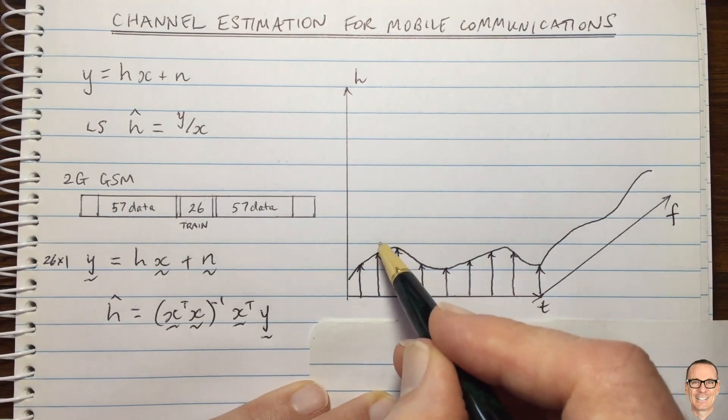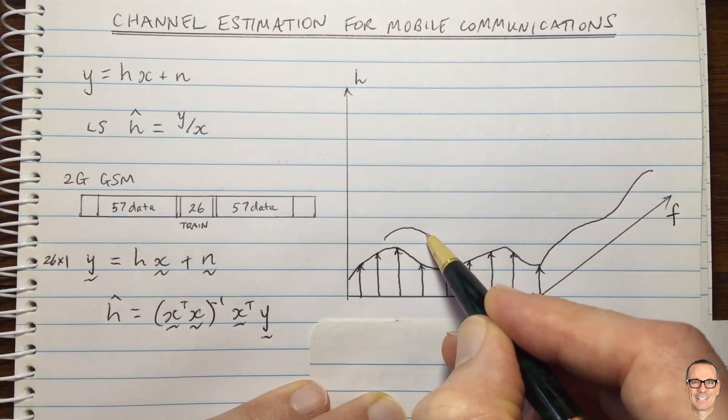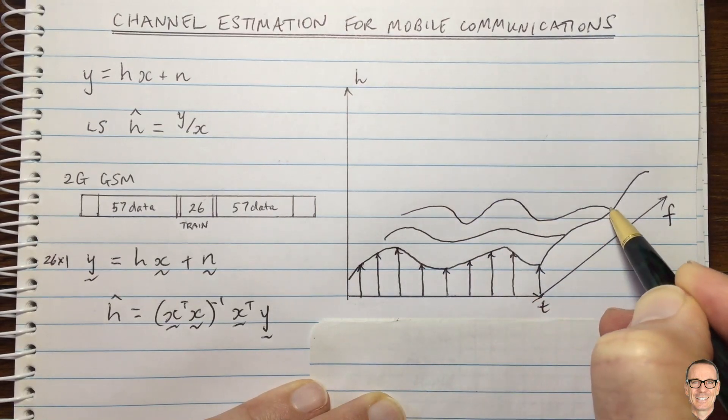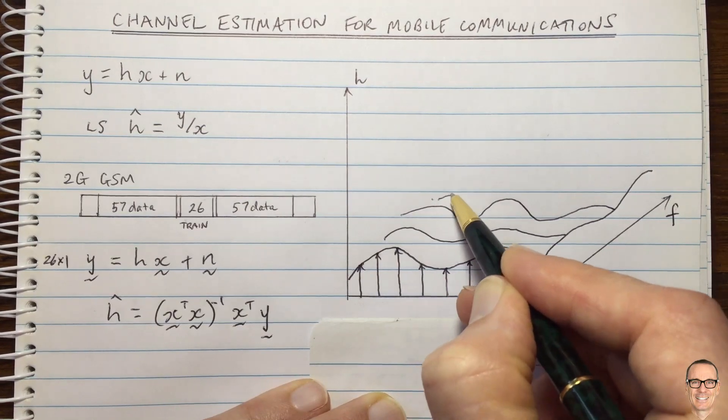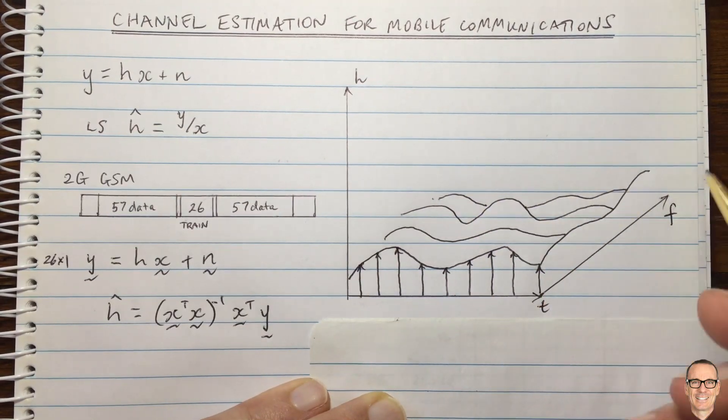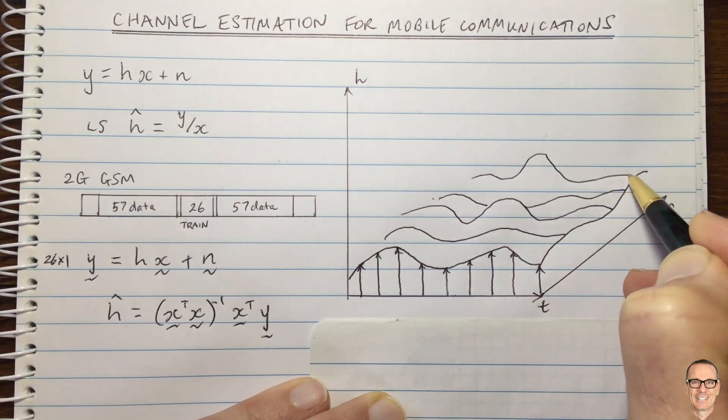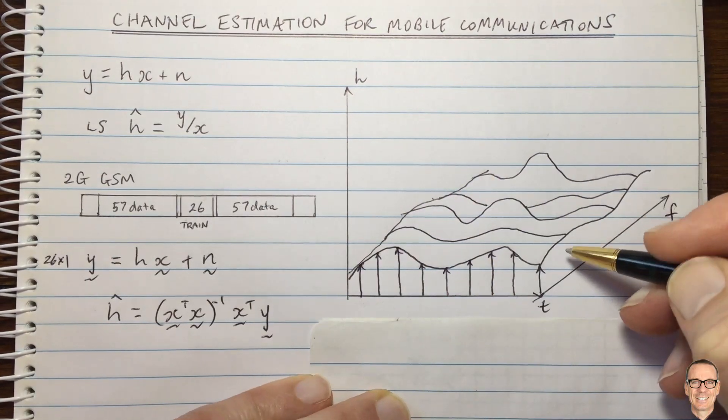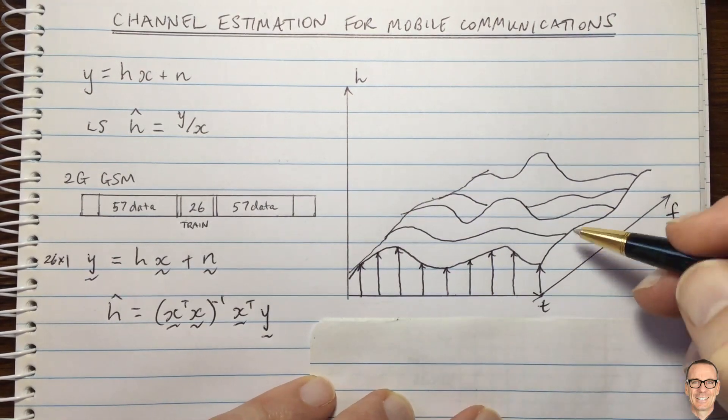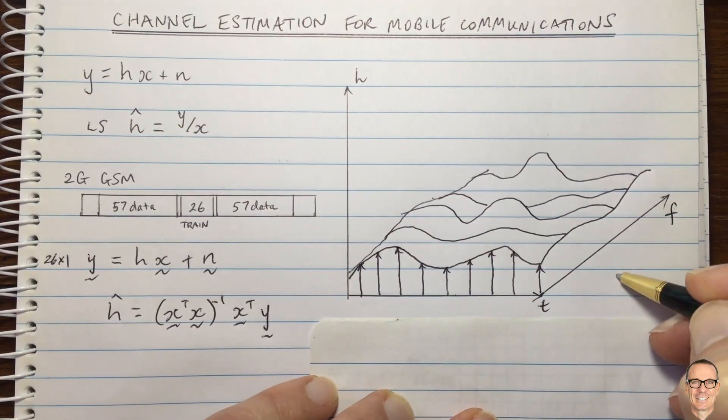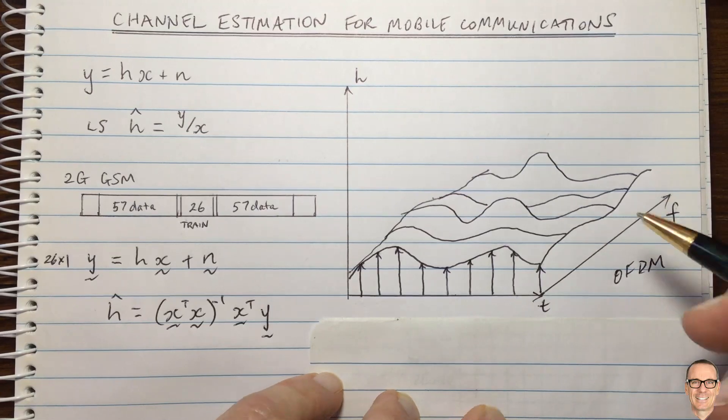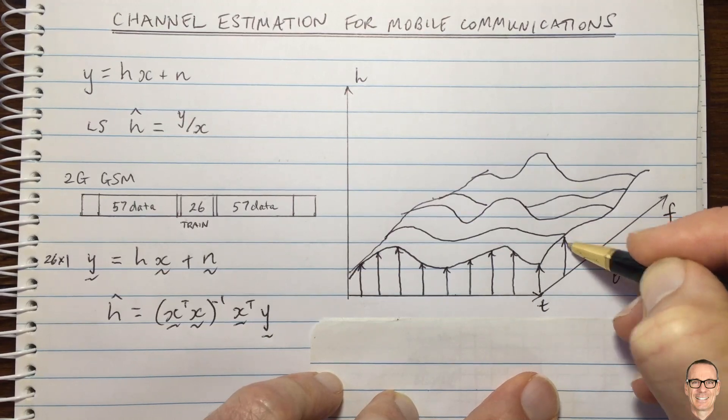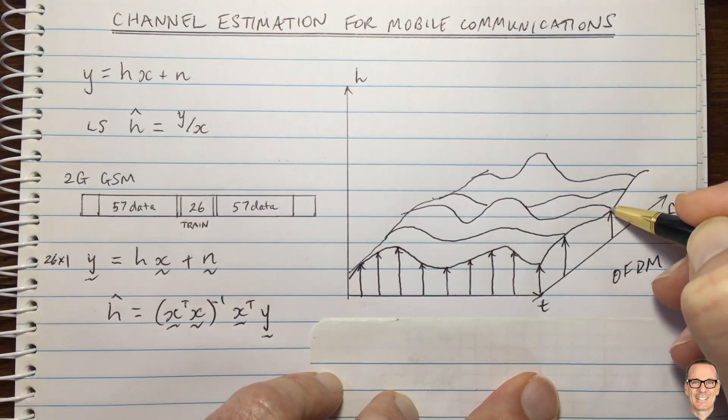If our signal is a wide band signal then we don't just have to think about the time variation, we have to think about the frequency variation as well. What we have here is a multi-humped type shape where the channel varies as a function of time as well as as a function of frequency. I'll draw a hand drawing here to show this two-dimensional shape where we're now needing to also sample in the frequency domain.